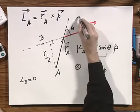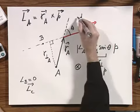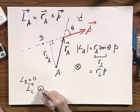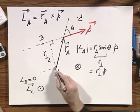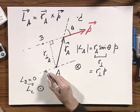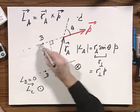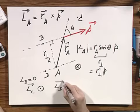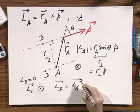Had I chosen a point C here, then the direction of the vector L, the angular momentum relative to point C, would have this direction and not this direction. Had I chosen any point D on a line through A parallel to the momentum itself, then L of D vectorially is exactly the same as L of A.